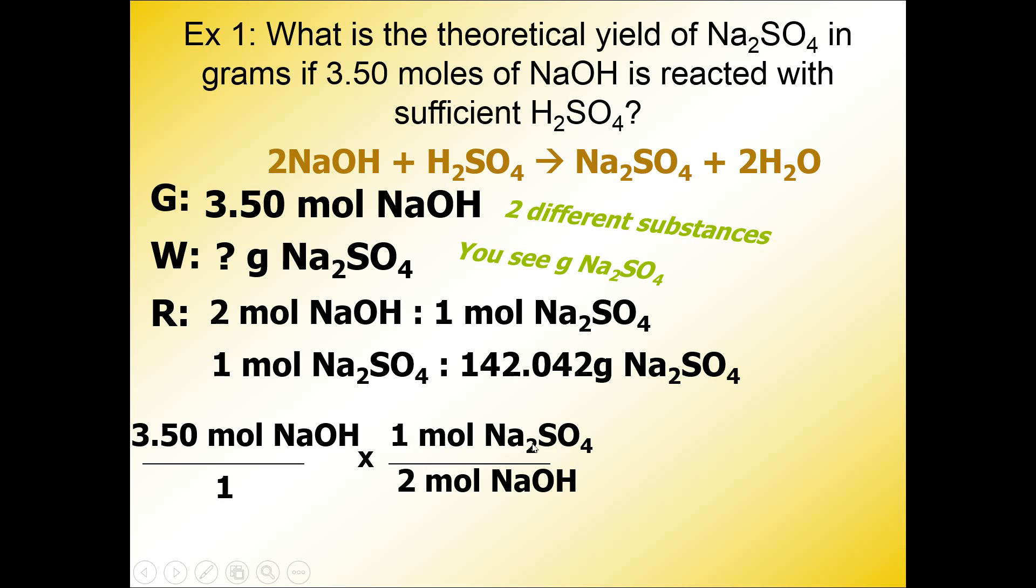I'm going to keep going with the problem. If I see moles of Na2SO4 in the top, diagonal from that, I'm going to take moles of Na2SO4, not the grams part. The moles part, I need the unit and substance to cancel out diagonally. And I'll put it in the denominator, and 142.042 grams of Na2SO4 goes in the top.